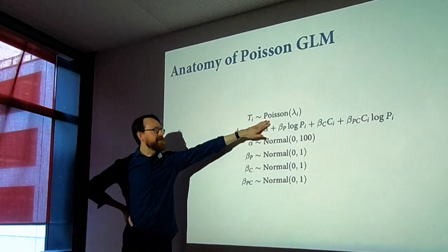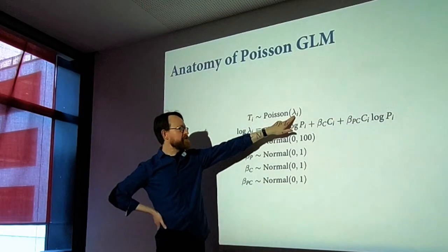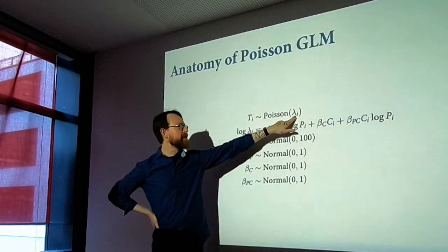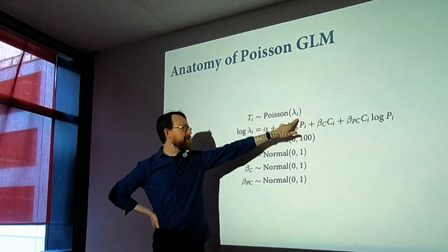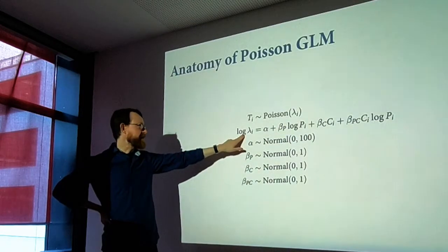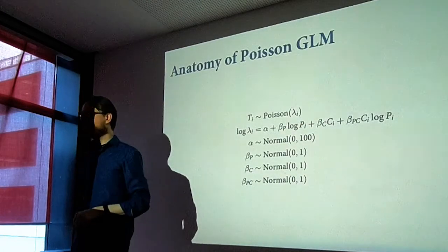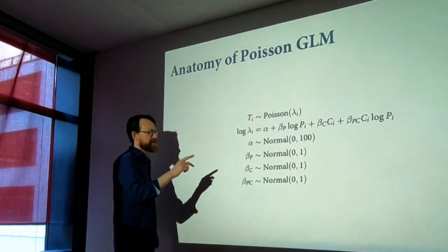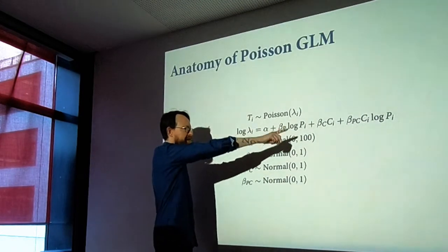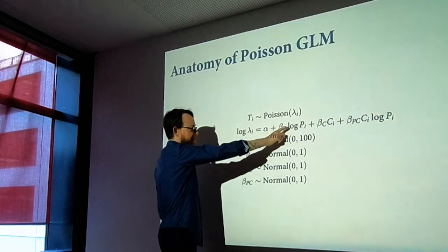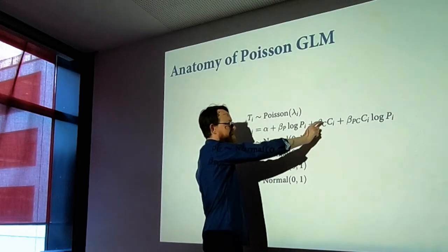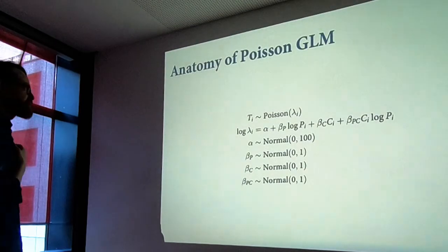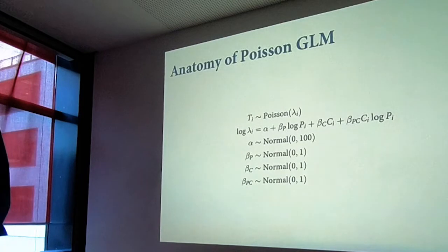We model it with a log link so that the log of the rate is a linear model — this is why these are called log-linear models. What that implies is that things are multiplicatively related: if you exponentiate the linear model, you get e to the alpha times e to the beta times predictor, and so on. Poisson models are multiplicative models, even though there's a linear model inside of them. This produces exponential scaling with a predictor.